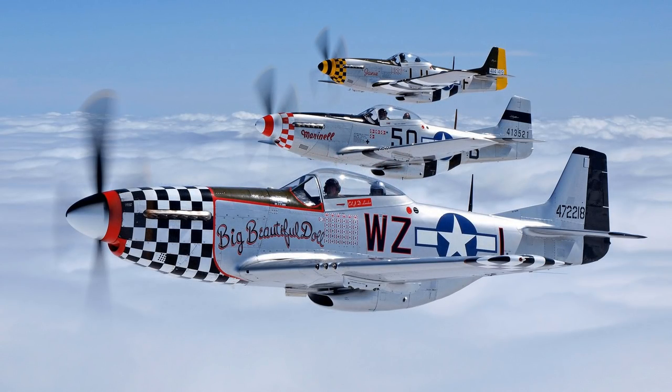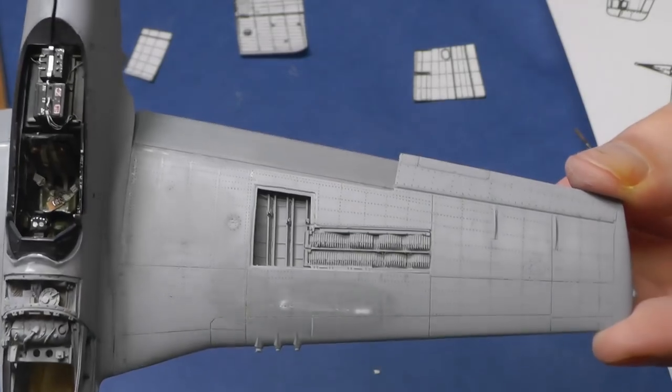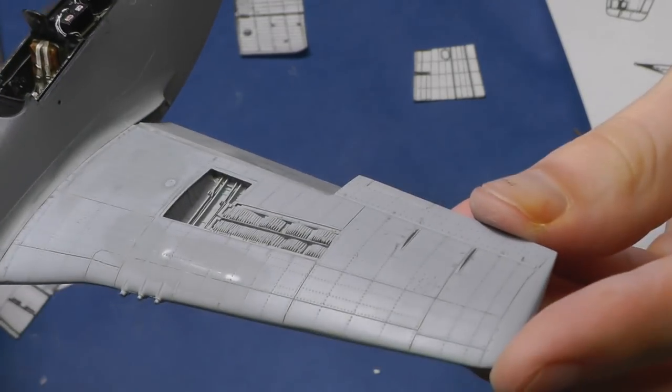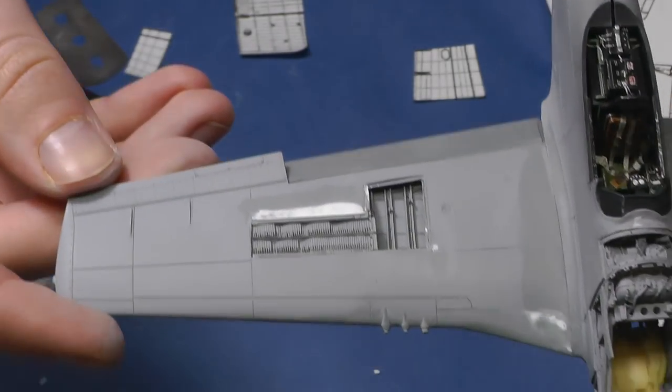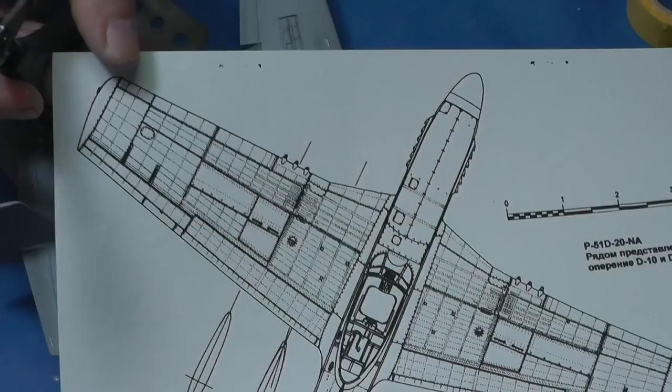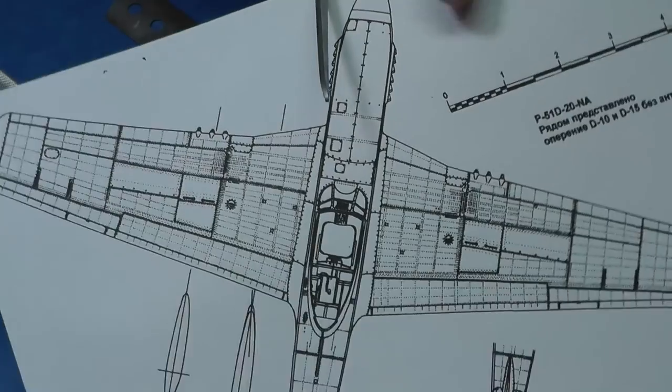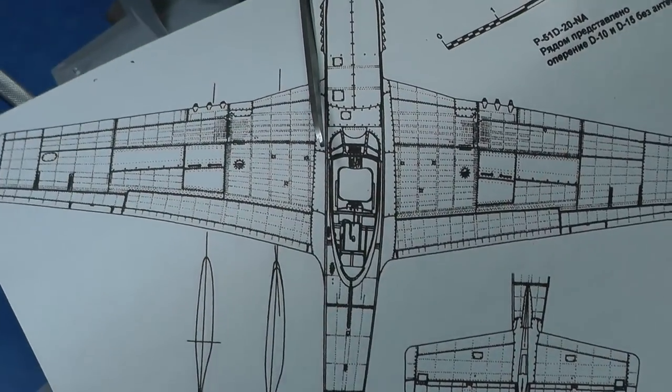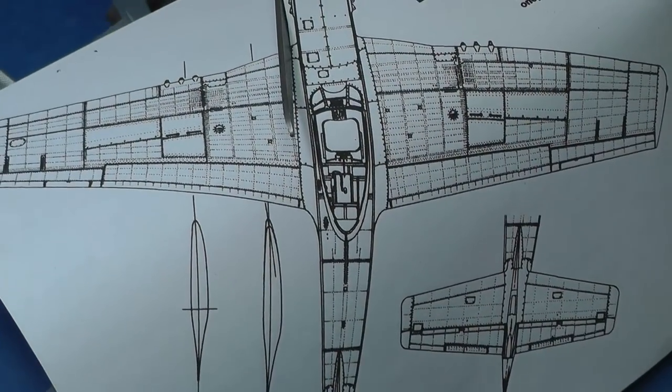Here is the difference for comparison. I found these rivets blueprints on Google. You can download them. The link is in the description under the video.